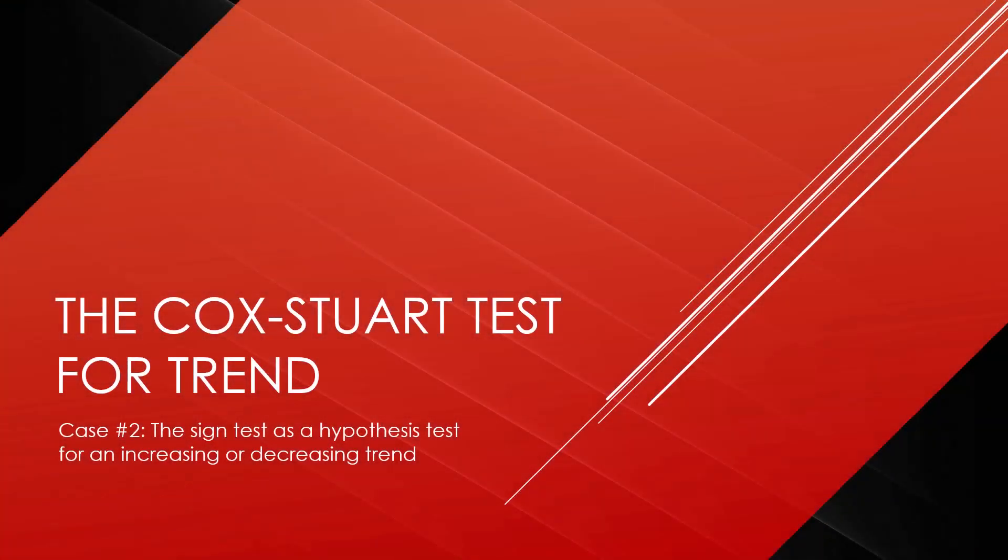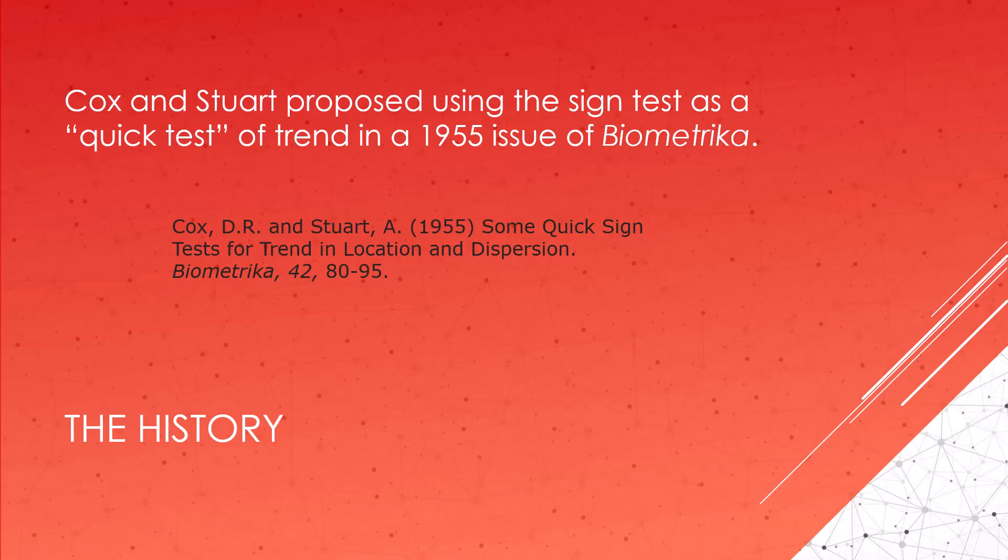During this video series I will look at four different cases for using the Sign Test. In this video we're going to look at case number two. The Sign Test is a hypothesis test for an increasing or decreasing trend. This was a test proposed by Cox and Stewart and so is known as the Cox-Stewart Test for Trend. They proposed this test in 1955 as a quick test of trend.